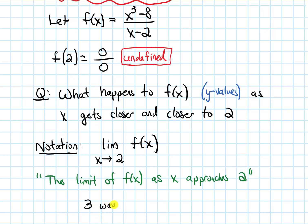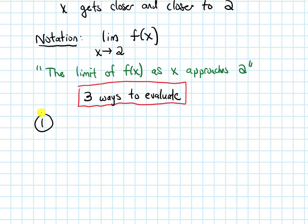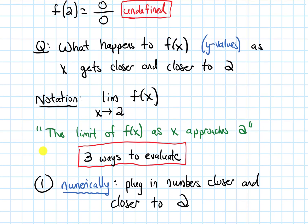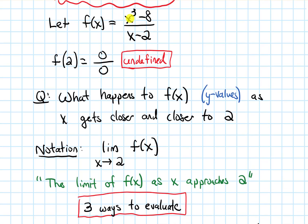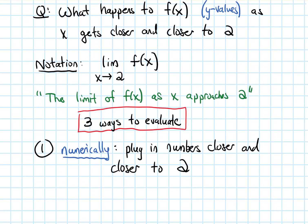There are three ways to evaluate this. The first is numerically. Numerically means we plug in numbers into our function, in this case, numbers that are closer and closer to 2. I'll have an estimate on what the outputs are getting close to. For the purpose of this video, I'm going to skip doing it this way.